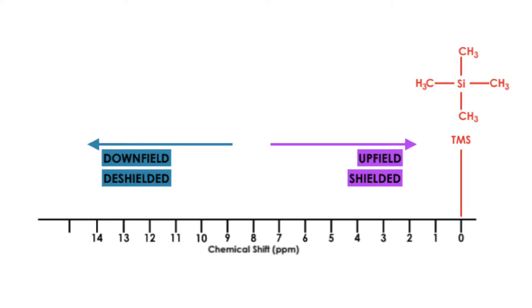Notice the graph runs from 0 to 14. Going left on the graph is considered downfield — this is where we'll see peaks for hydrogens that are deshielded. While going toward 0, or to the right, is upfield, and this is where we'll see peaks for hydrogens that are shielded.